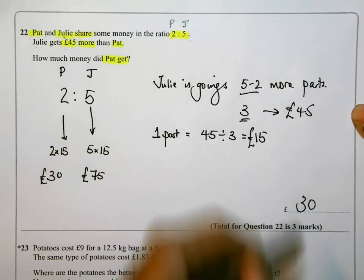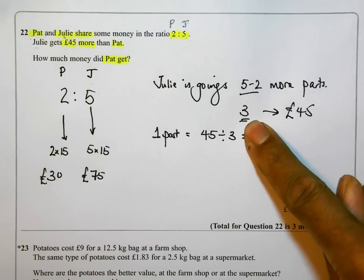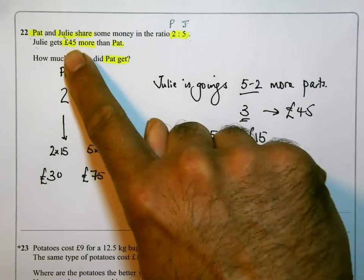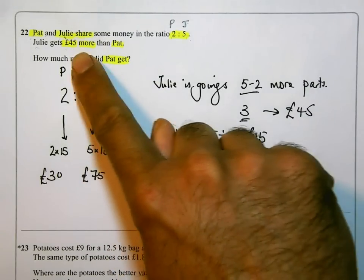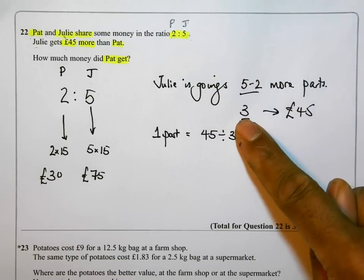I need you to play this again, maybe play it a couple of times. Think about what I did and how I did it. How did I come up with that 3? That's the difference in the number of parts they each get, but also the difference in the amount of money that they got.